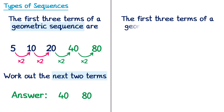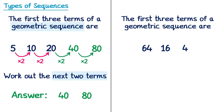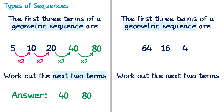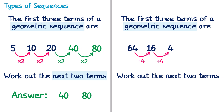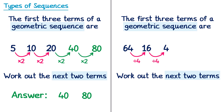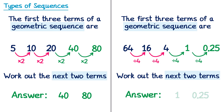The first three terms of a geometric sequence are 64, 16, and 4. We need to find the next two terms. Since it's geometric, we're either multiplying or dividing. To find the rule, we work out 16 divided by 4, which is 4 — so we divide by 4 each time. We can check: 64 ÷ 4 = 16, which confirms the rule. Continuing: 4 ÷ 4 = 1, and 1 ÷ 4 = one quarter, or 0.25. So the answer is 1 and 0.25.